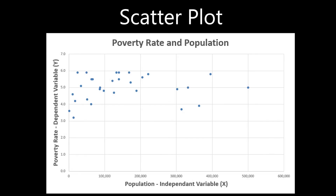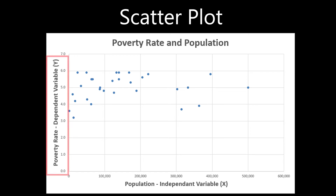Scatter plots are another common method used to understand how different variables may have a relationship with one another. The basic idea is that you have one variable plotted on the x-axis known as the independent variable, and another variable plotted on the y-axis known as the dependent variable. In this example, using the same data set seen previously, the scatter plot can potentially reveal if the poverty rate is dependent upon the population count. Like group frequencies and histograms, scatter plots are very useful graphical devices for understanding how different variables interact, but they ignore specific locations.